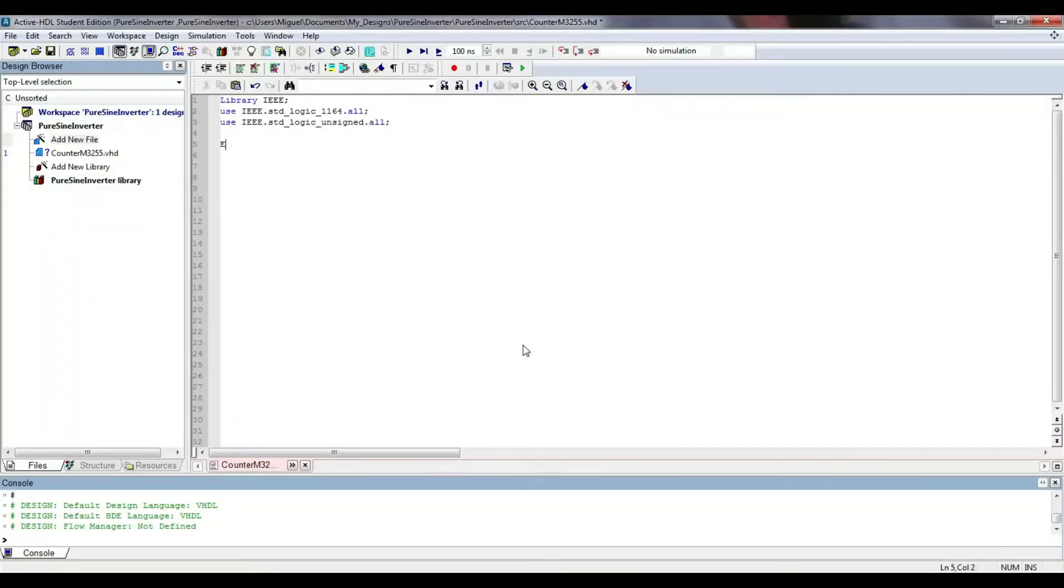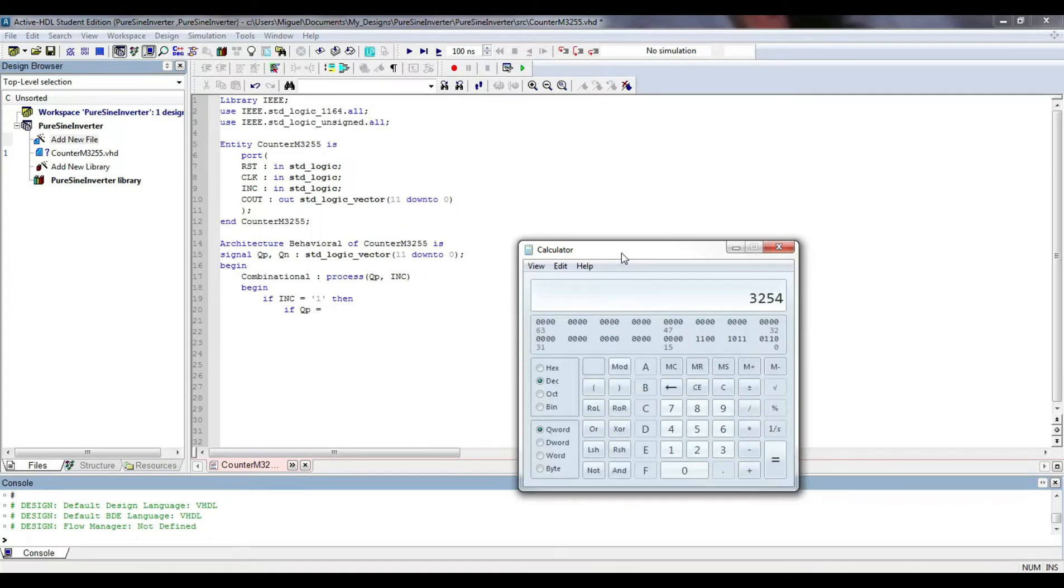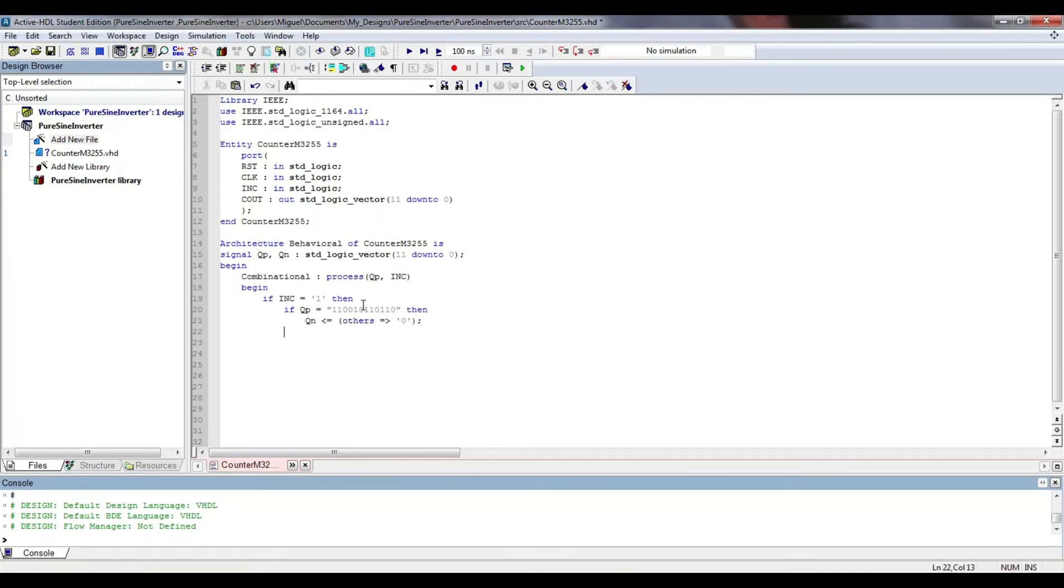First, I describe the counter modulo 3,255. It has three inputs: reset, clock and increment signal. The output is a 12-bit vector, which increments its value with every rising edge of the master clock. The counter's architecture is behavioral since it comprises two processes, a combinational and a sequential one.